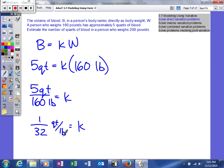Alright, so now we're going to rewrite our formula with our known k. So we get B equals 1 over 32 times W. Now we're going to plug this in and get our answer.